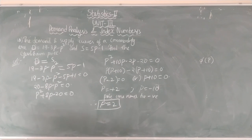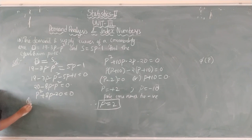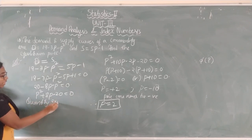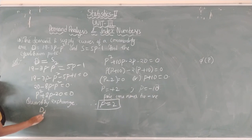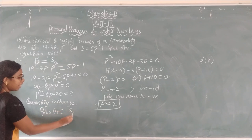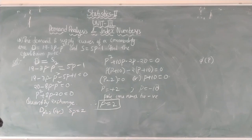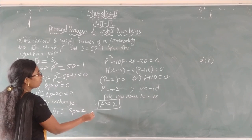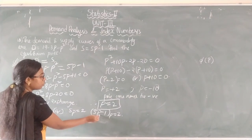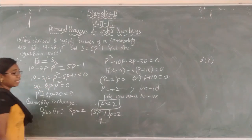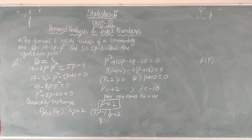If they ask how to find the quantity exchanged, you substitute the P value either in D or in S. Finding S at P equals 2: S equals 5P minus 1 equals 5(2) minus 1 equals 10 minus 1 equals 9. So 9 is the quantity exchanged. This is the first problem related to equilibrium price. The next class will continue with the next topics.